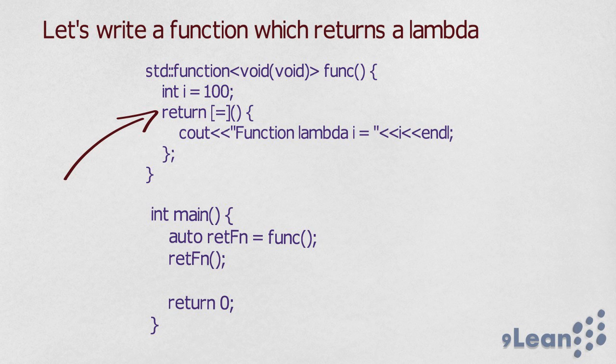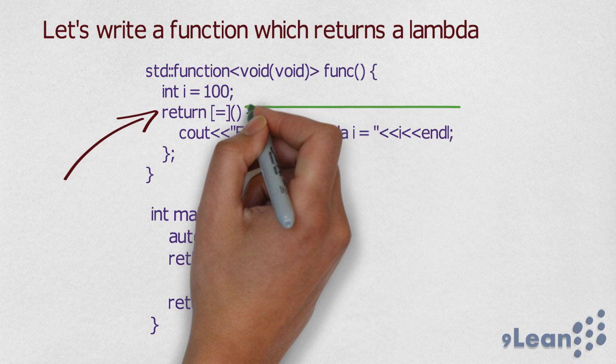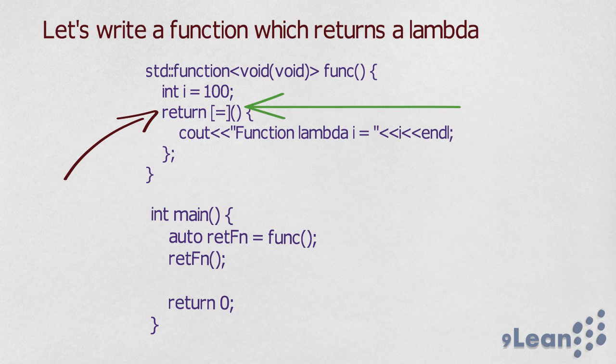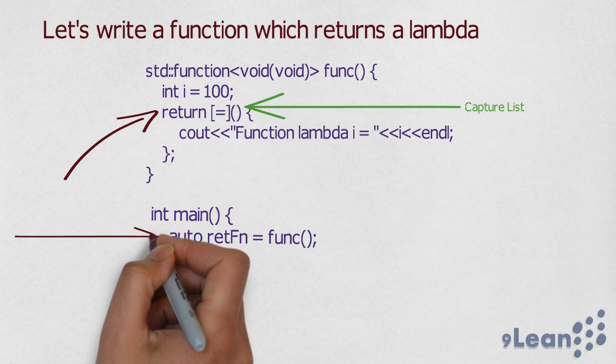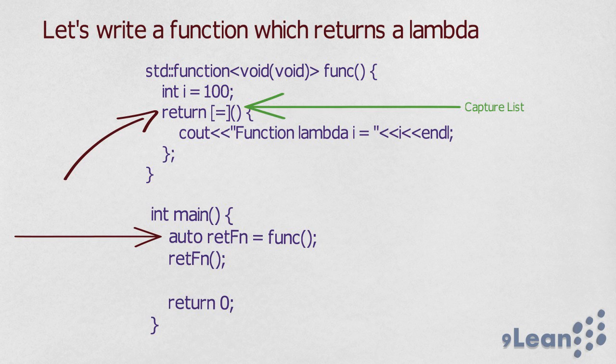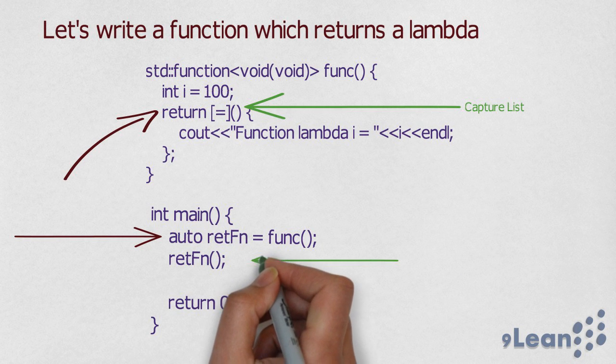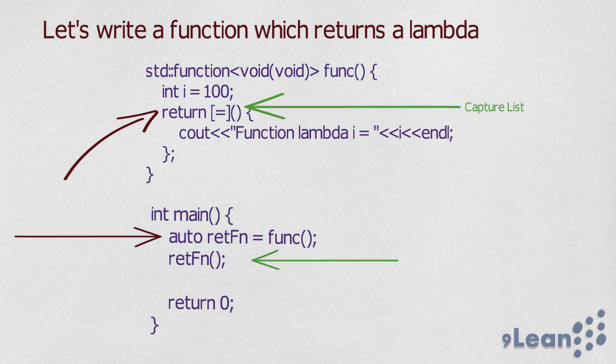Here you can see that the function is actually returning a lambda and the lambda function is using the capture list by means of equal to sign. In the main function, the func is returning a function which is being called in the next line.